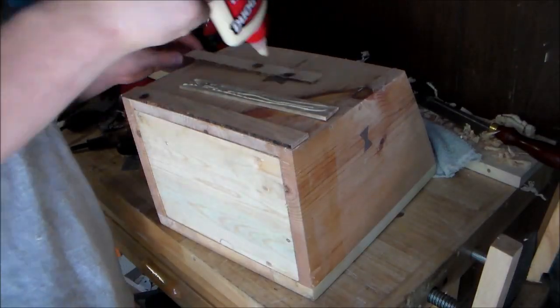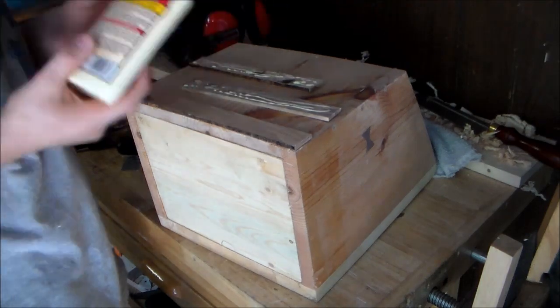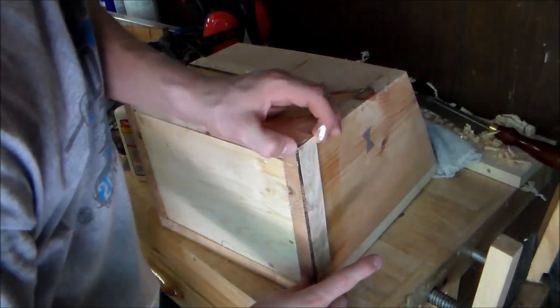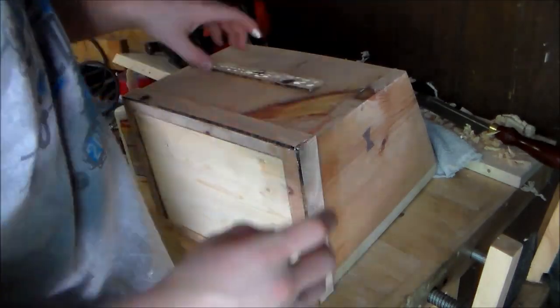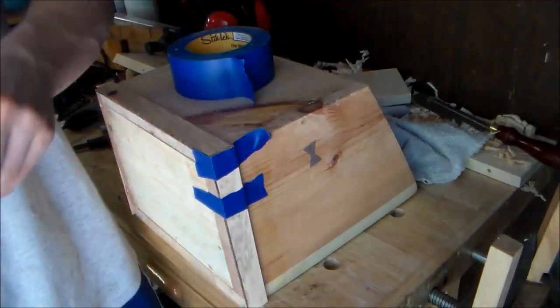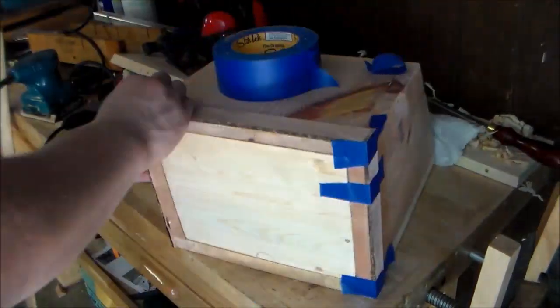We also need to cover up those nails that we put in there, and to do that I milled up some hickory, I think it was, because it smelled like bacon when I was planing it. And we put that on the side so it'll look nice and cover up the nails. I didn't have any clamps, so I used some painter's tape.